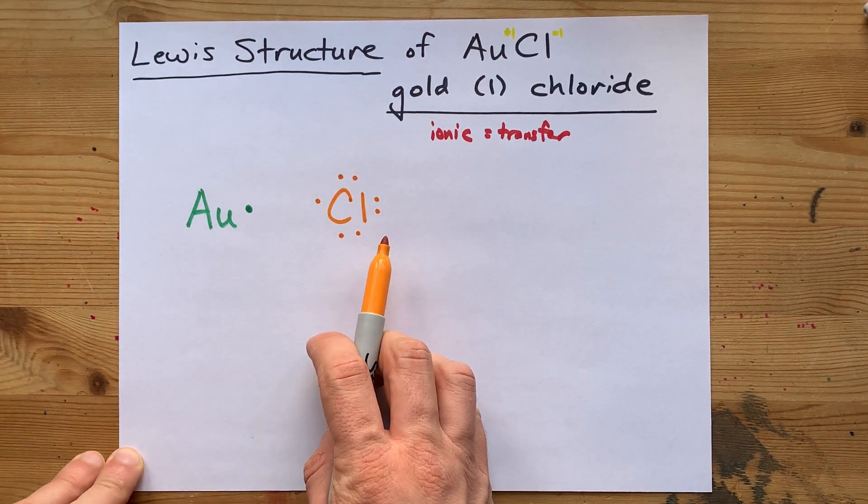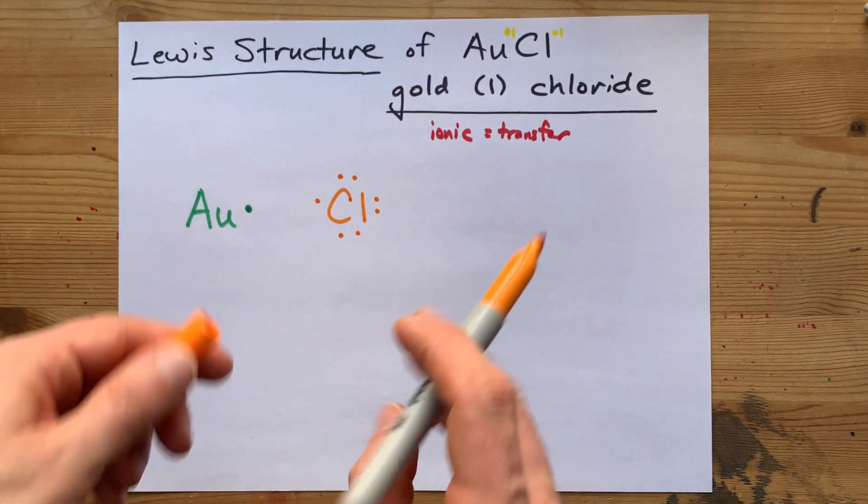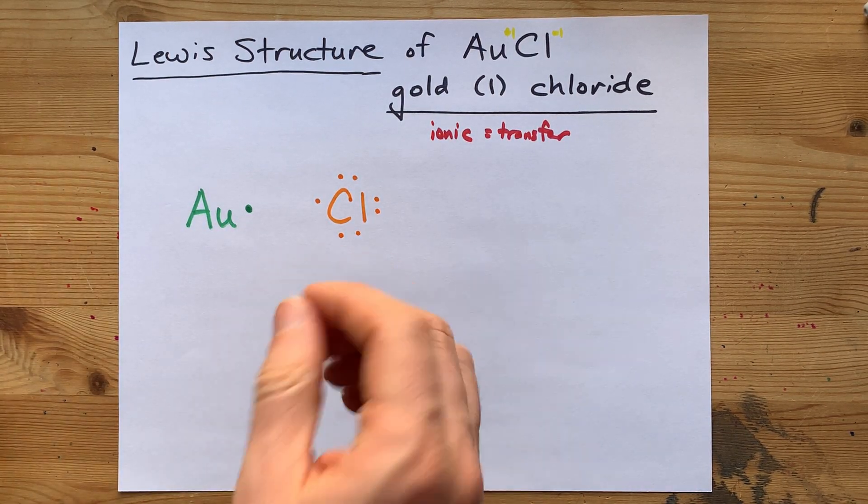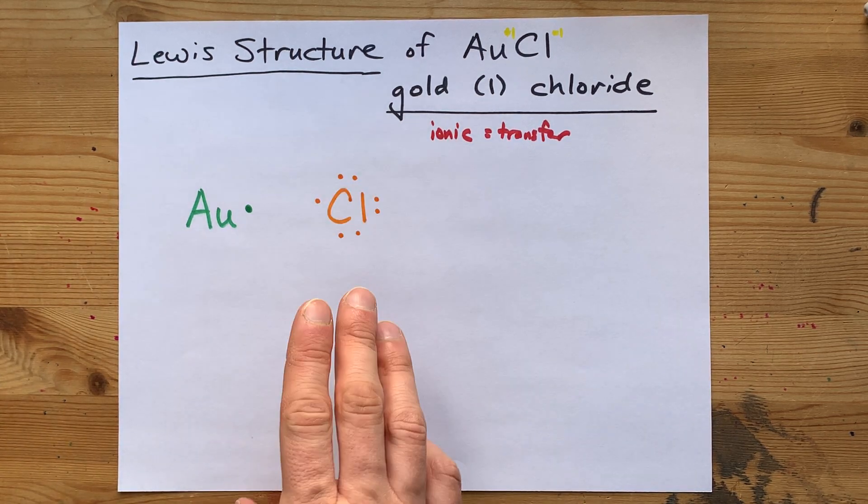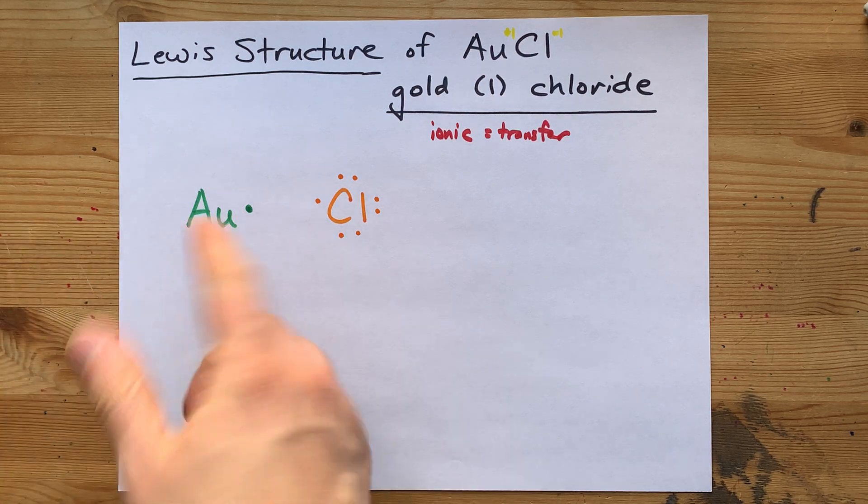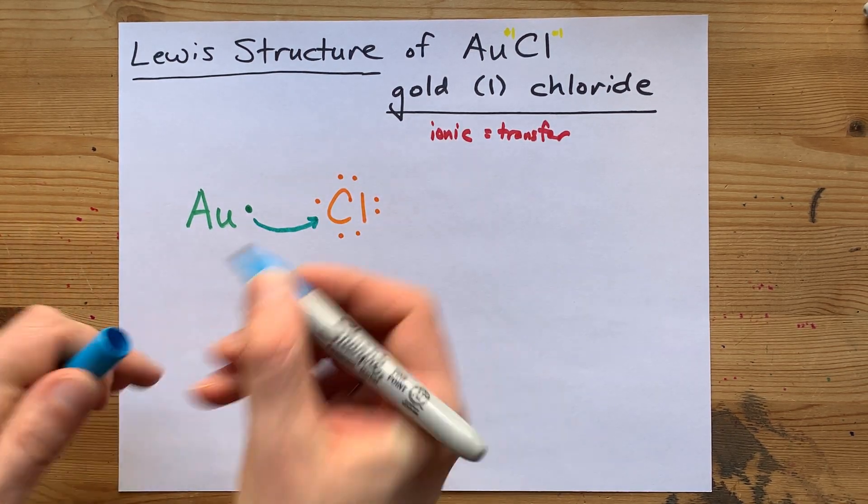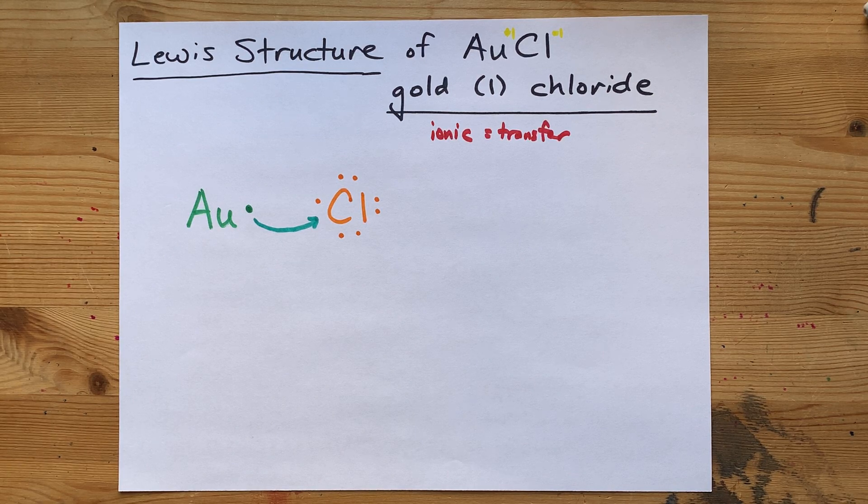The non-metals want a full octet of 8 electrons in their outer shell. That's what makes them stable. Where is this chlorine going to get its extra electron? Hopefully, that's obvious. Gold, the metal, will give its electron up and give it to chlorine.